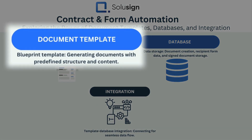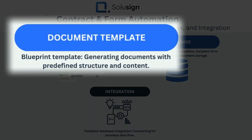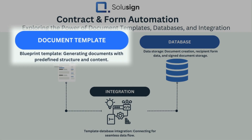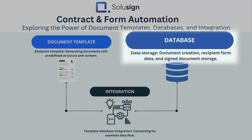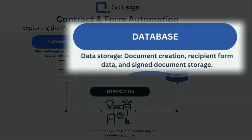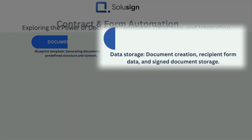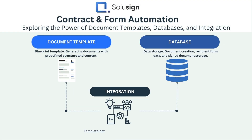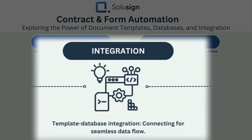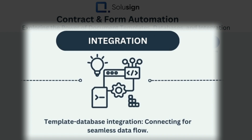The document template will act as the blueprint to generate the documents. Your database will store information that you need to create those documents. And you also need to use the integration because you need information to move between your database and your document templates, which is how you're automating the process.